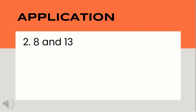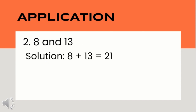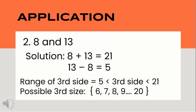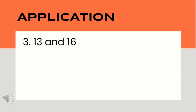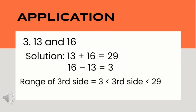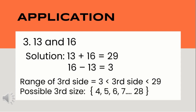Second example: sides 8 and 13. 8 plus 13 equals 21 (maximum). 13 minus 8 equals 5 (minimum). The third side is greater than 5 but less than 21; possible values are 6, 7, 8, 9 up to 20. Third example: sides 13 and 16. 13 plus 16 equals 29 (maximum). 16 minus 13 equals 3 (minimum). The third side is greater than 3 but less than 29; possible values are 4, 5, 6, 7 up to 28.